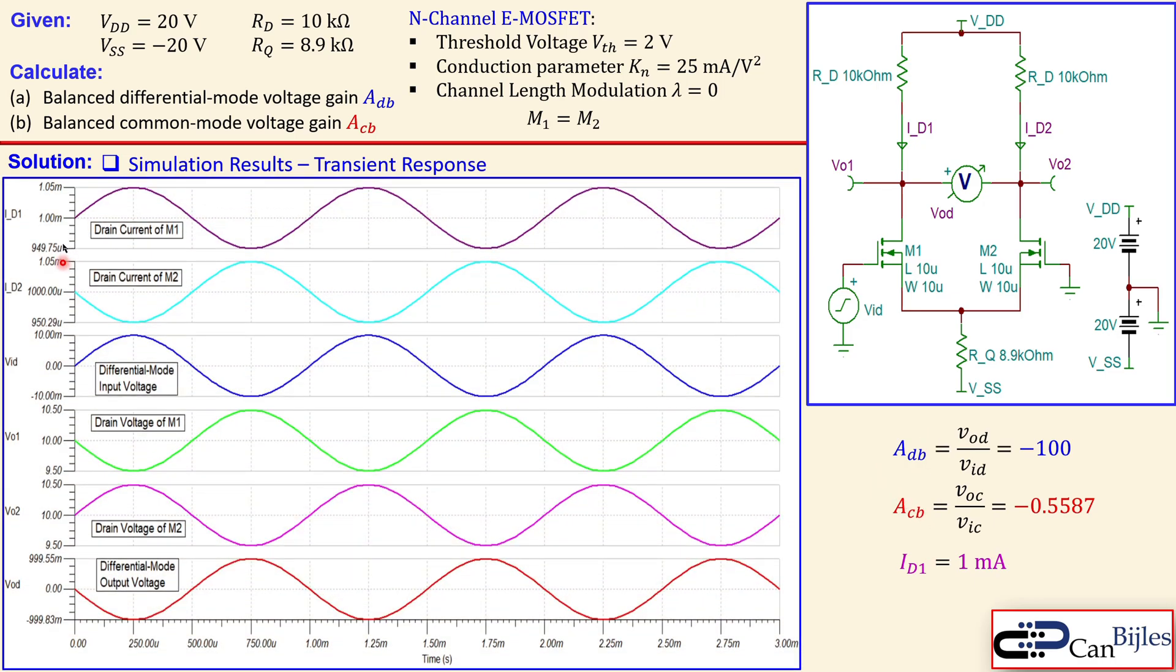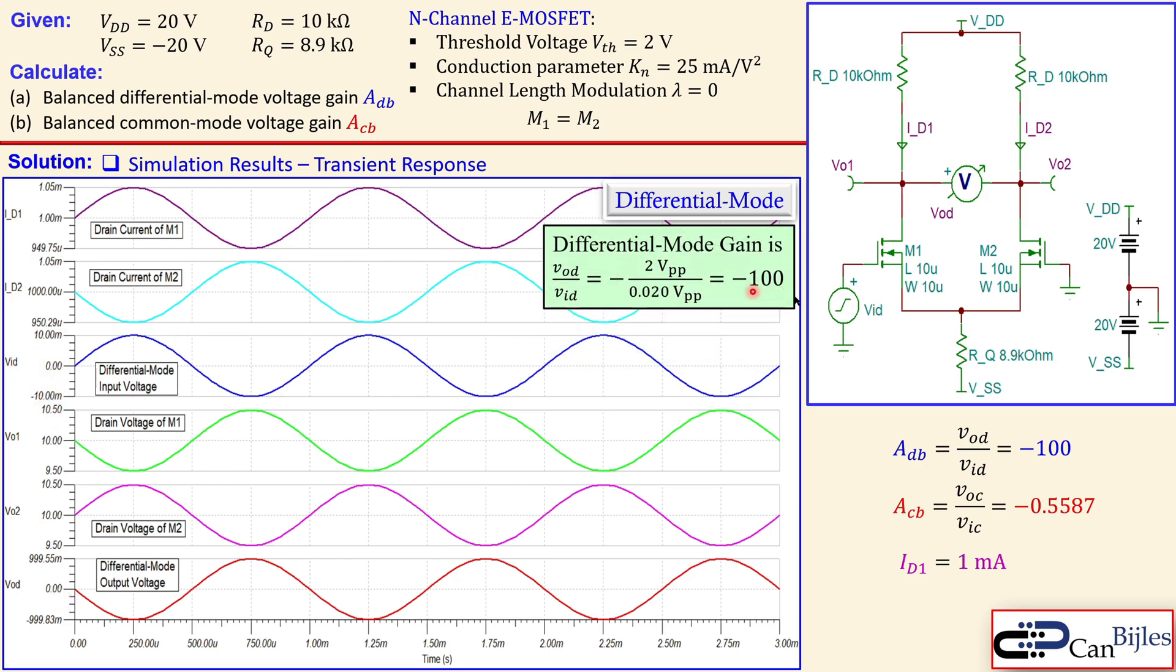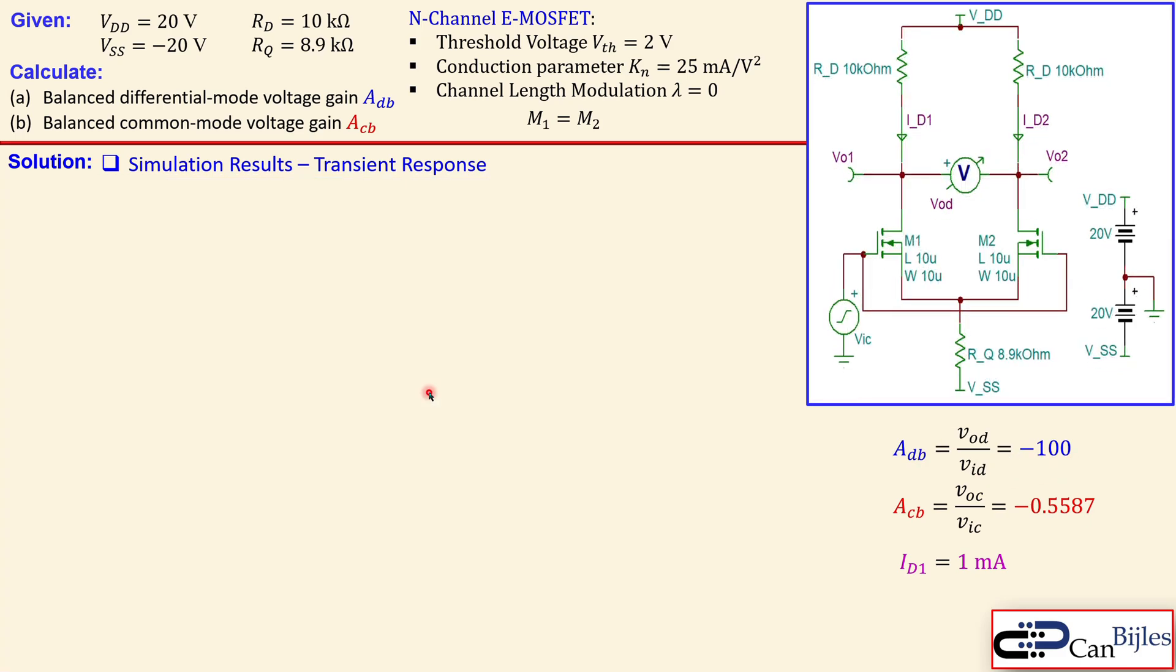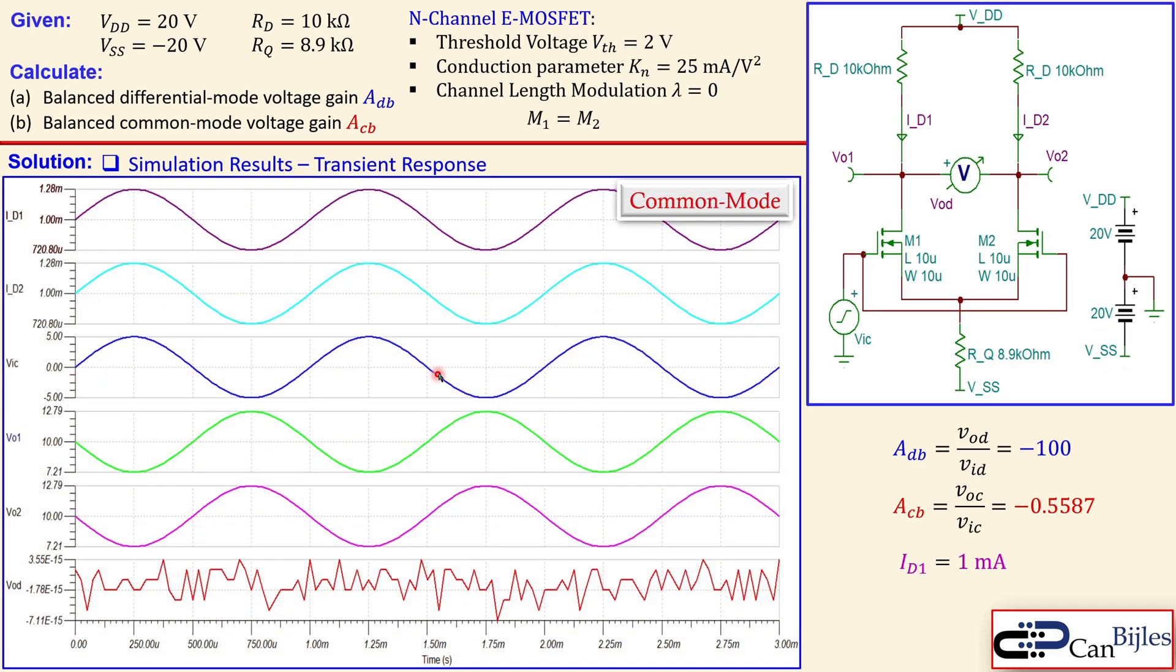Let's also look at the transient response to check the gains. We have a couple of plots here. The blue one is our VID, 10 millivolts peak with 1 kilohertz frequency. We see the differential mode input voltage and in red the differential mode output voltage, which is inverted, 180 degrees out of phase. The peak value is approximately 1 volt, so the peak-to-peak value is approximately 2 volts, and the peak-to-peak here is 20 millivolts. That gives minus 100, so this is also checked because we calculated minus 100.